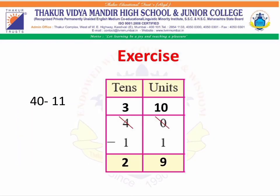Now students, let's start with the exercise. We have 40 minus 11. Zero minus one is not possible, so we borrow from the tans column. If we remove one tan, it becomes three tans, and in the units column it becomes ten units. Ten minus one gives nine. And three minus one gives two. So our answer is 29.